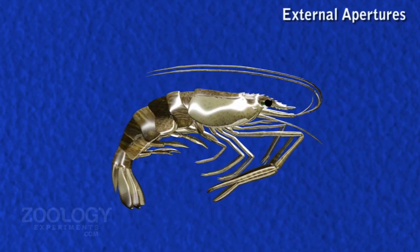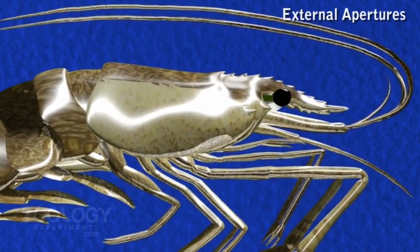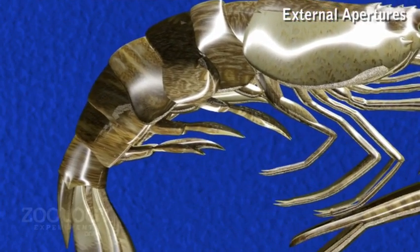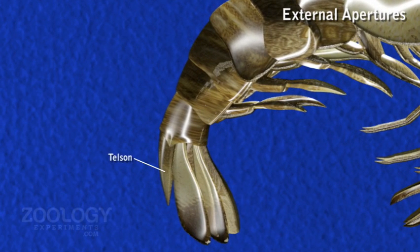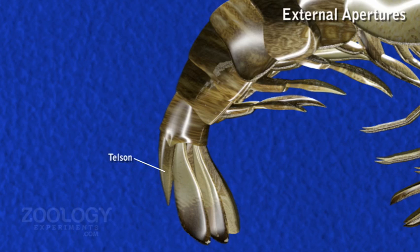External apertures: The mouth opens mid-ventrally at the anterior end of the cephalothorax. The anus is situated ventrally at the base of the telson. Paired renal apertures open on raised papillae on the inner surface of the coxa of the antennae. Paired female genital apertures open on the inner surface of the coxa of the third pair of walking legs. Paired male genital apertures are situated on the inner surface of the coxa of the fifth pair of walking legs. Two minute openings of the statocyst lie in a depression dorsally on the basal segment (precoxa) of each antennule.